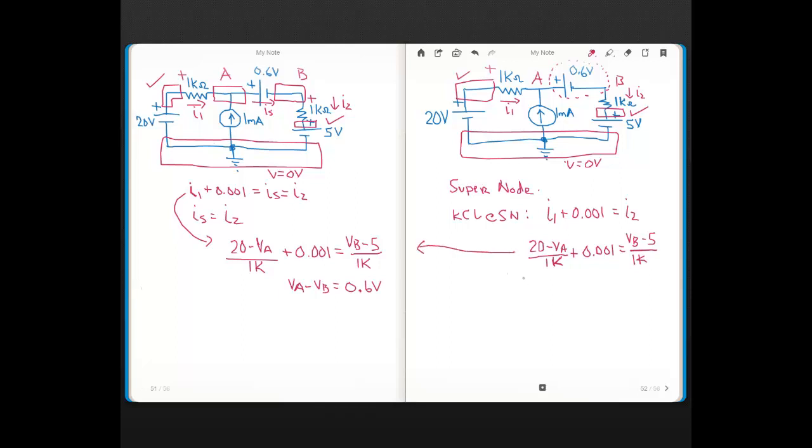And we're going to need a second expression, and it's the same VA minus VB equal to 0.6 volts. So you see, using this supernode concept, you end up with the same node voltage expression, and also you need the same second expression that you get from the voltage source as we did earlier. So what's the big deal about supernode?